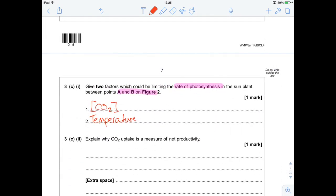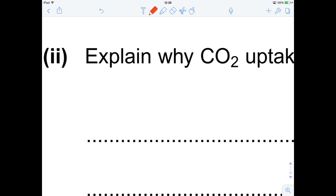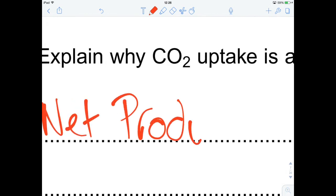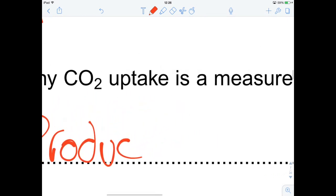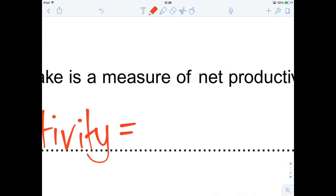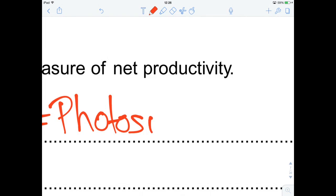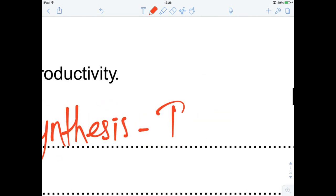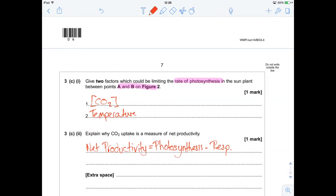Explain why carbon dioxide uptake is a measure of net productivity. Well, it's quite nice because you can summarize this in a nice little equation. Net productivity is equal to photosynthesis, which is going to be producing sugars, minus respiration, which is going to be using up sugars. Nice, succinct way of putting this.